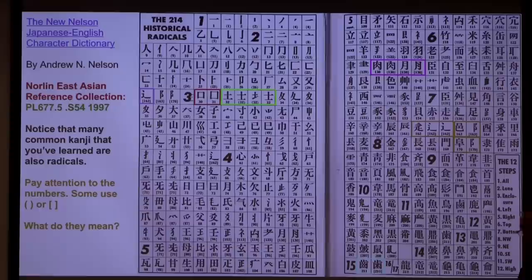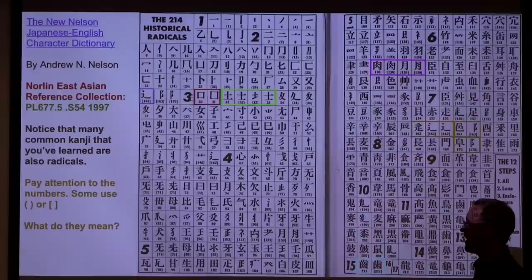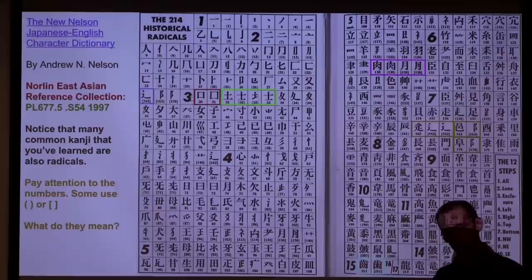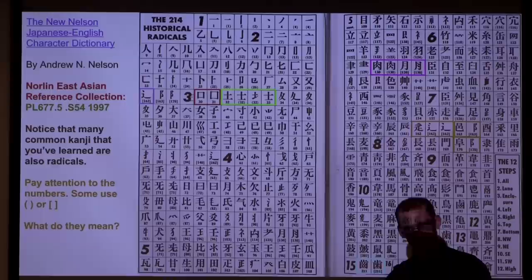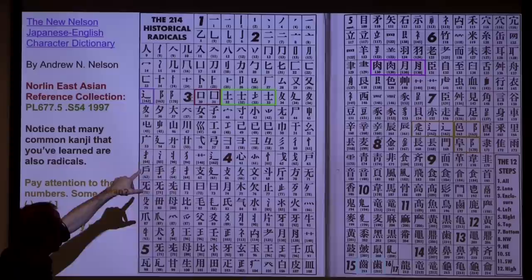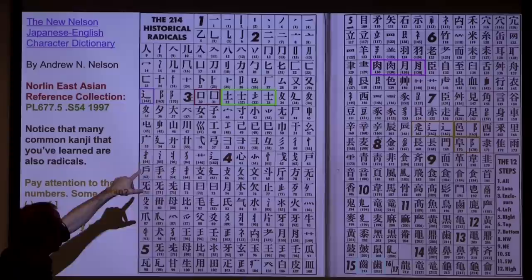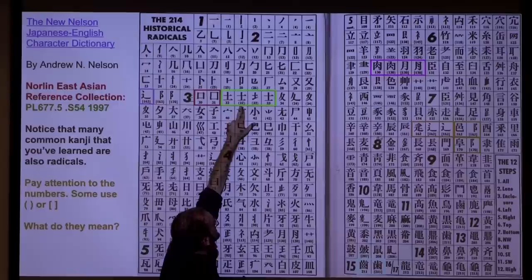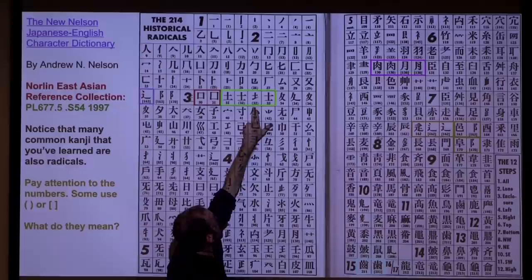When you use an online dictionary, you don't actually engage in the process — you give it information and it spits it back, but you don't know why it works the way it does. There's real value in using a paper dictionary. In the green box, radical 32 appears three times: here's earth, then a variation where the lines are slightly different, then a completely separate radical meaning 'soldier,' and then the 'tsuchi' on the left when it's varied.